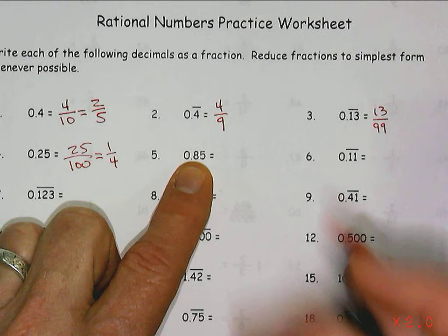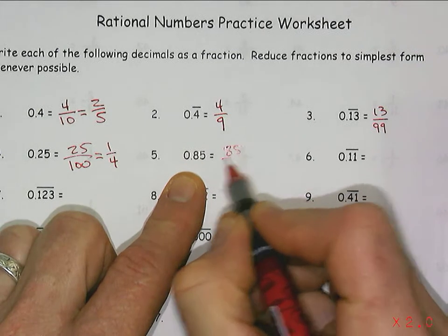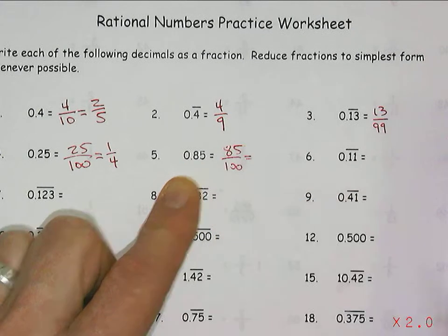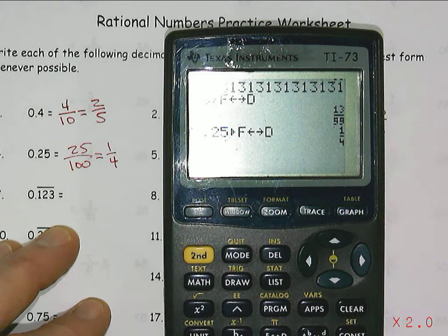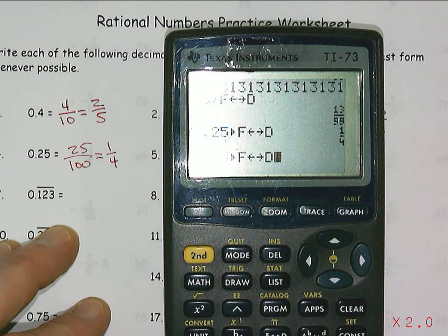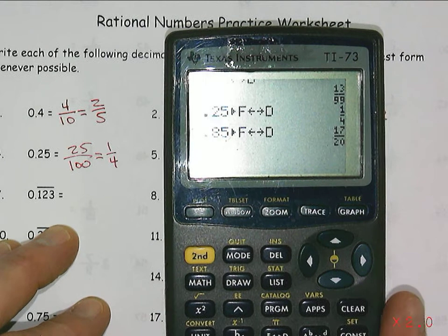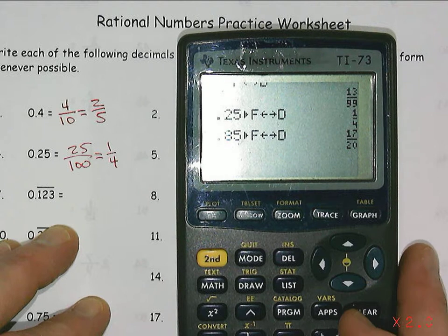Or again, 0.85, I know that's 85 one-hundredths, but if I wasn't sure about that, 0.85 fraction to decimal, and see that one does reduce. So it reduces down.